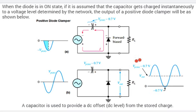So if it is assumed that the capacitor gets charged instantaneously we can say that the output of a positive diode clamper will be as shown in this figure.